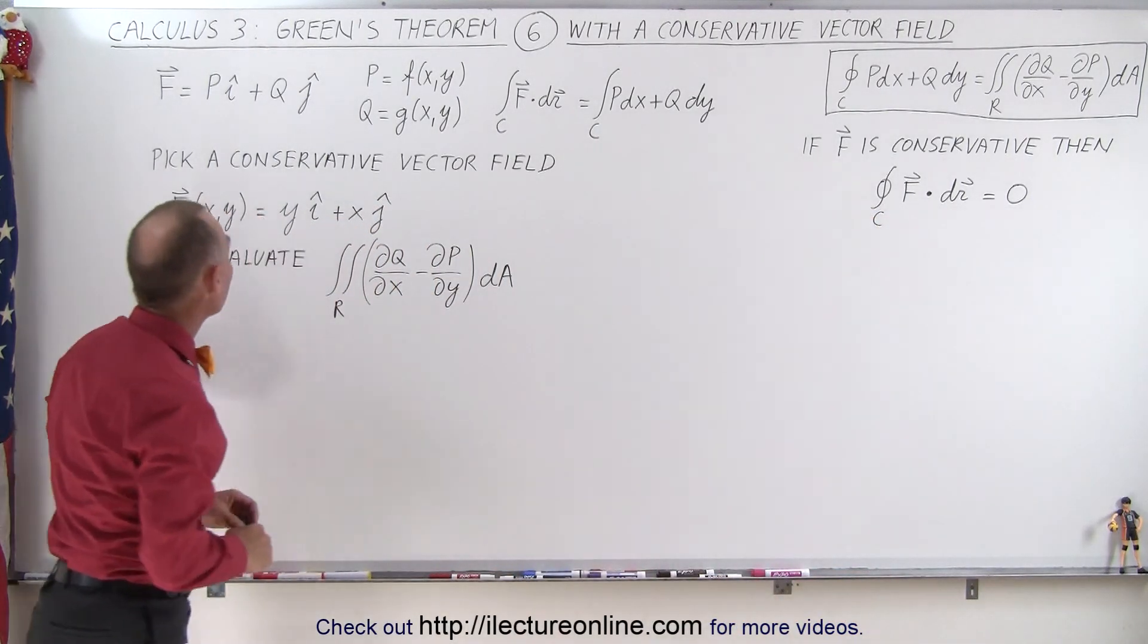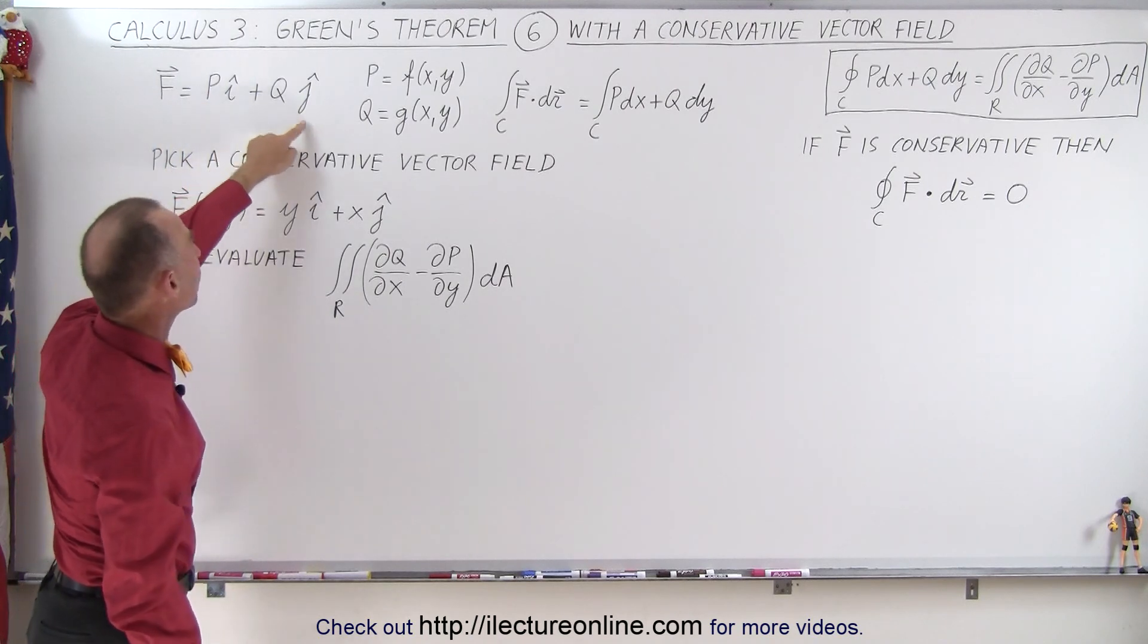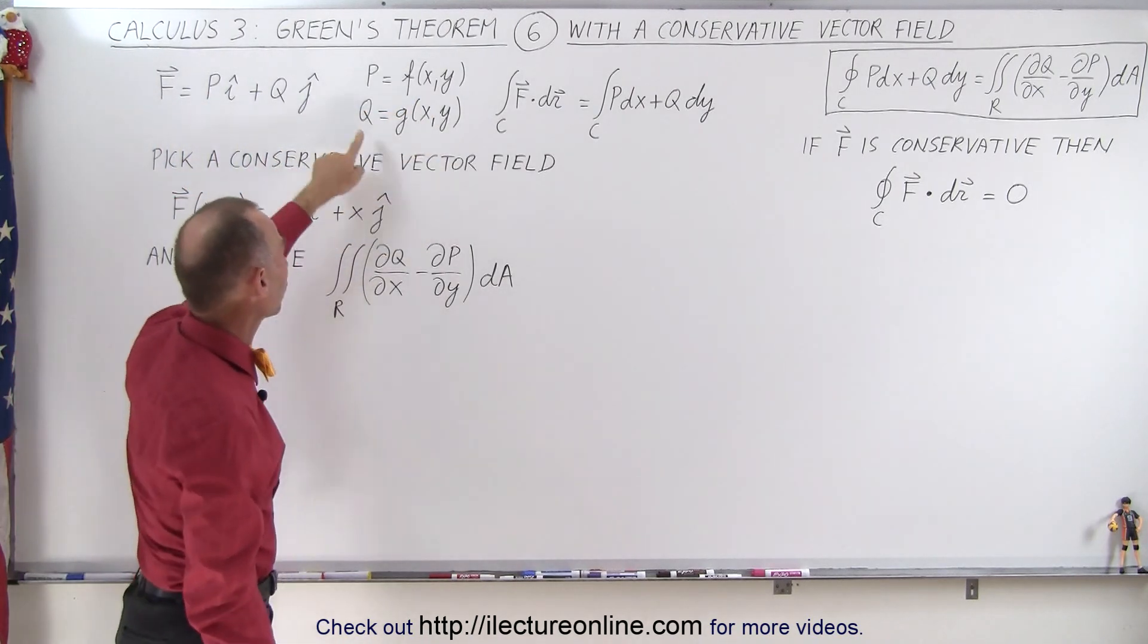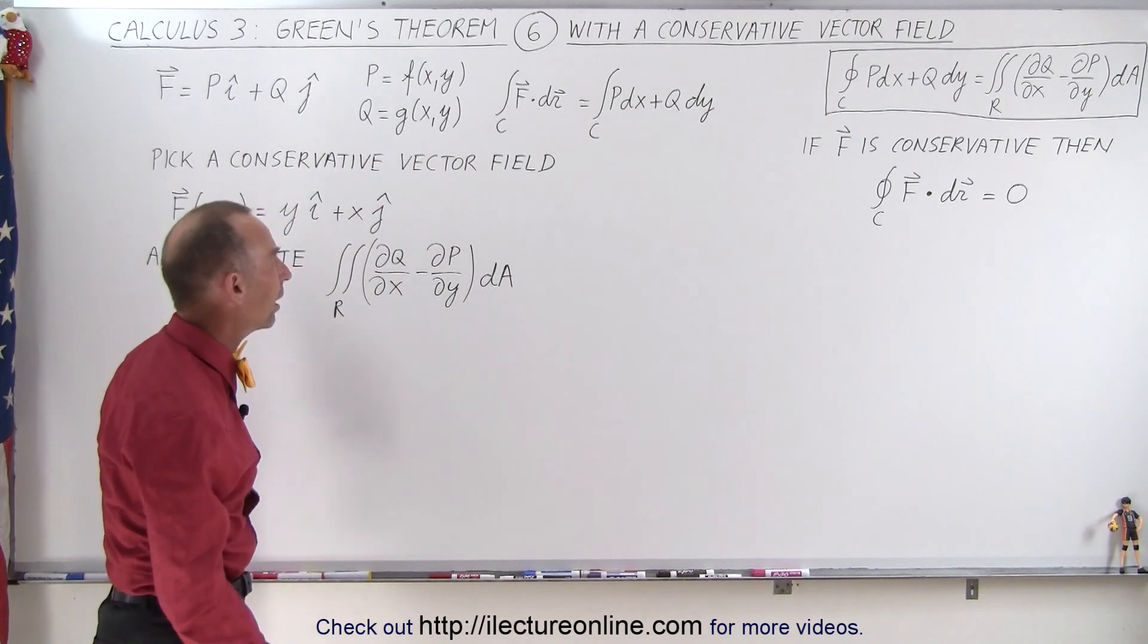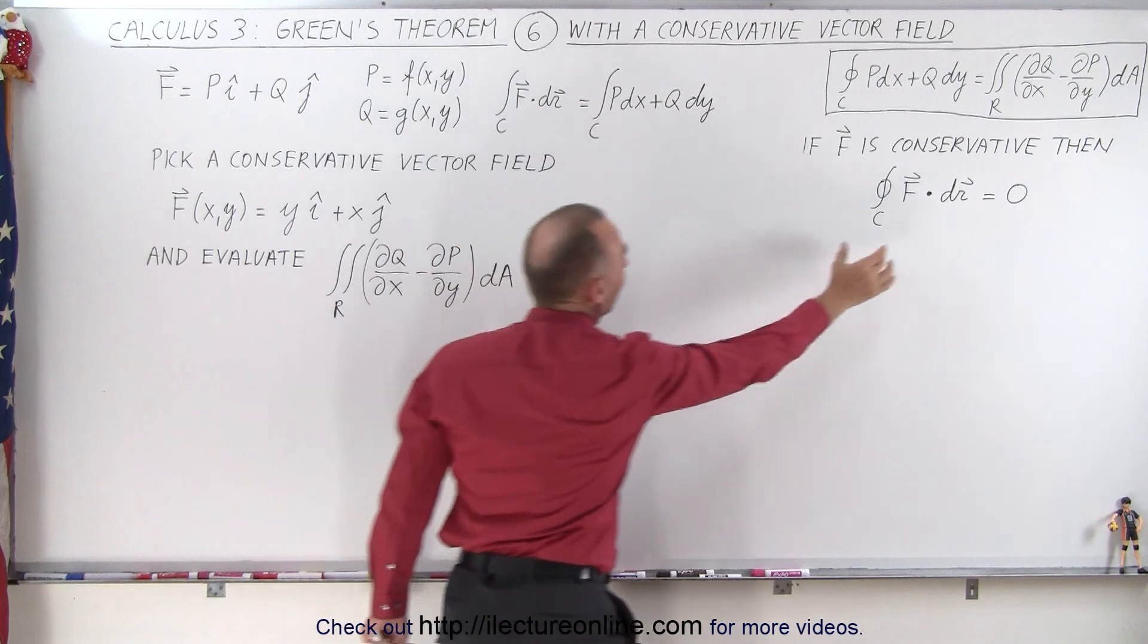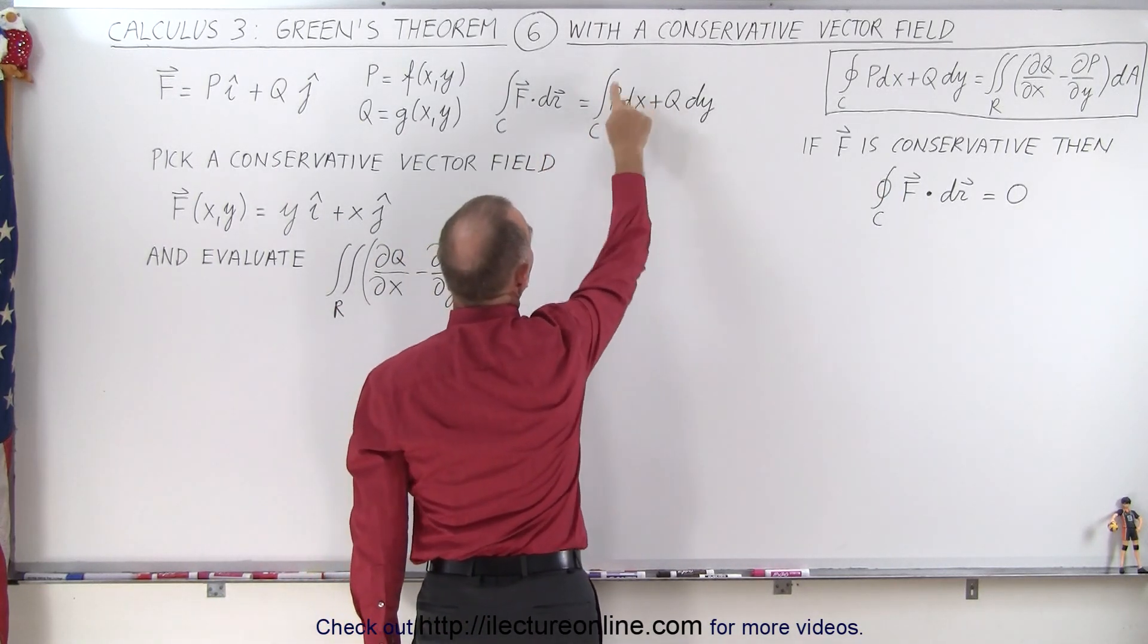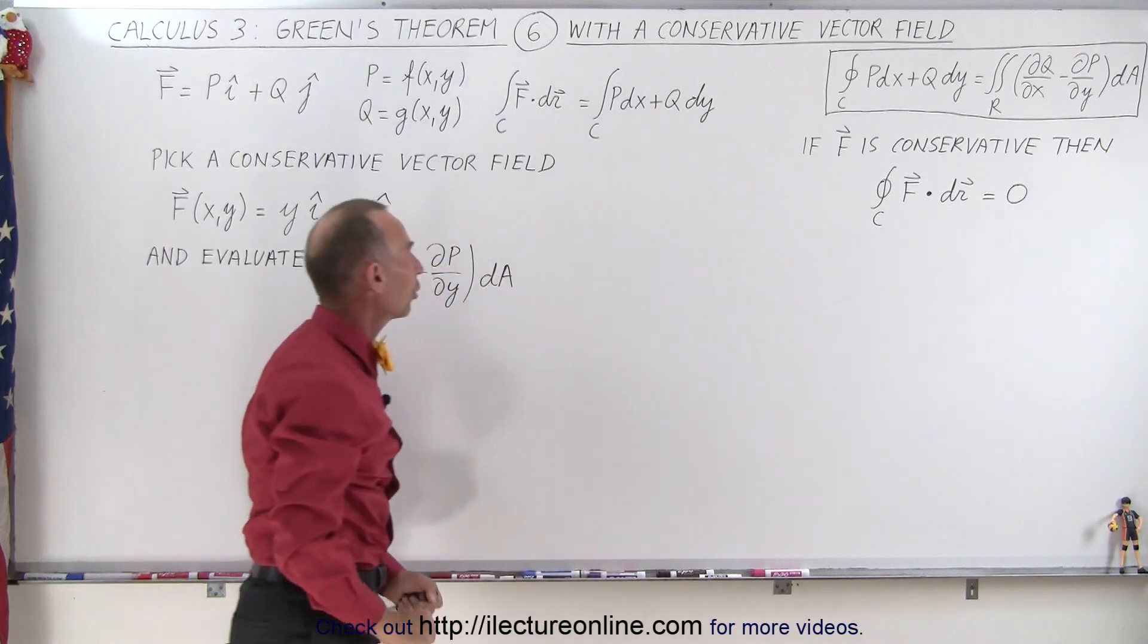If we express our vector field as p in the i-direction plus q in the j-direction, where p is a function of x and y and q is a different function of x and y, then this expression can be written as p dx plus q dy integrated over a curve.